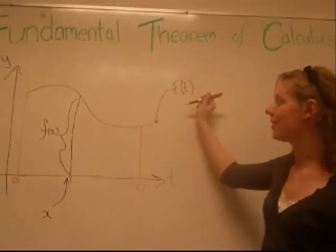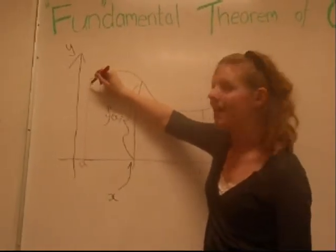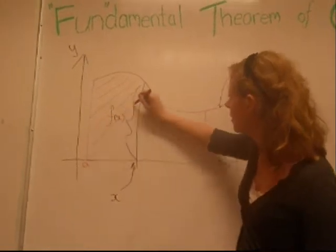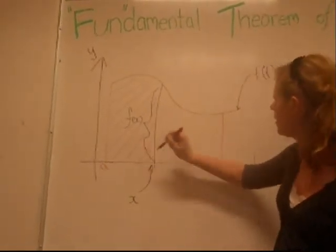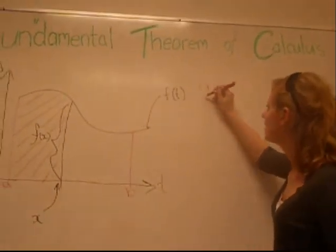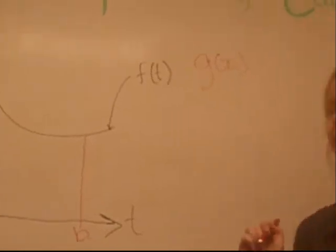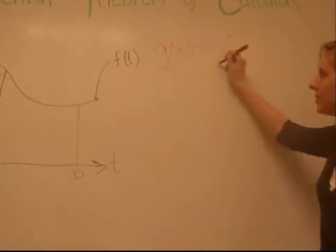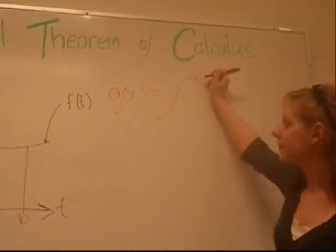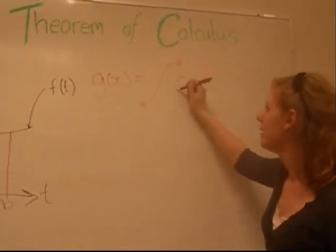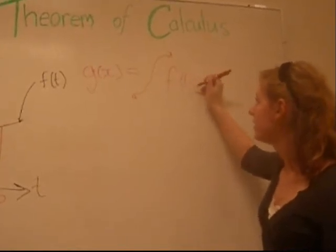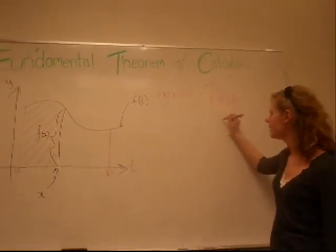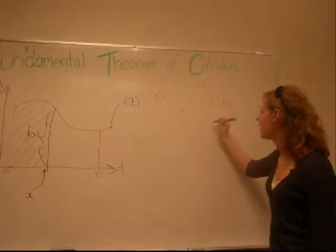We want the area under the curve f of t from a to x. This will be called g of x. And since it's the area under the curve f of t, we write this as the integral from a to x of f of t dt.